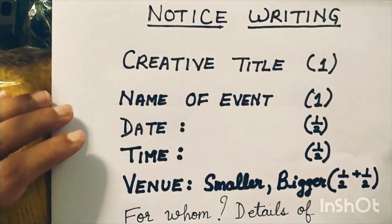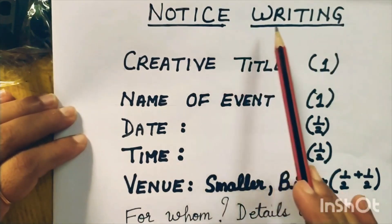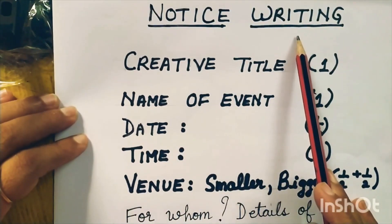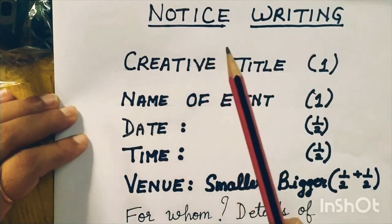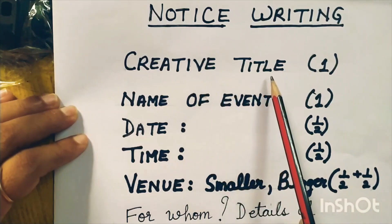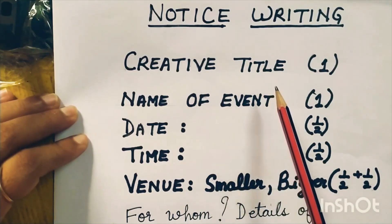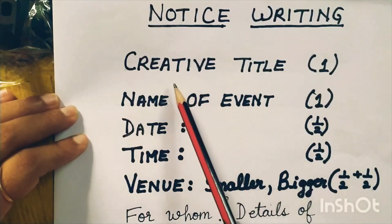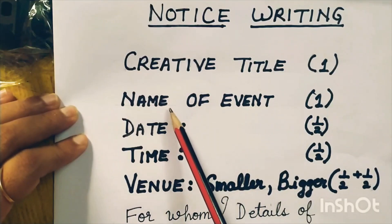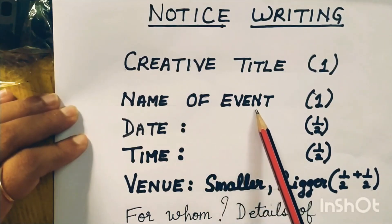Now I'm going to show on paper the exact format of writing notices according to the ICSE board for classes 9th and 10th. When you attempt this in your exams, you don't have to give the heading 'notice writing.' Right on top, you will write down the creative title — it has to be creative in your own words. This creative title carries one mark. After the creative title, you can leave a line, then write down the name of the event taking place.